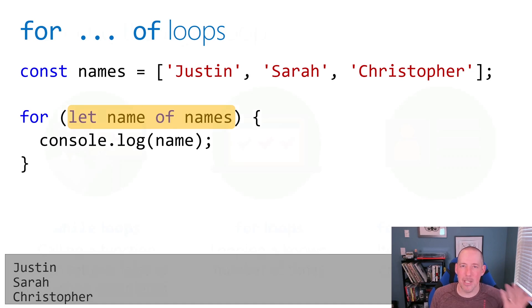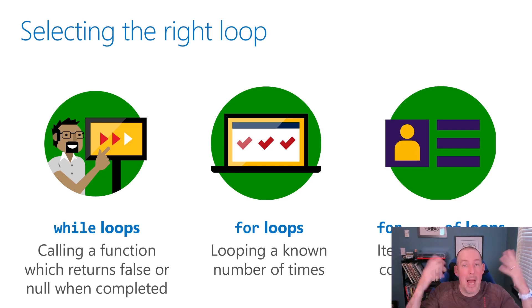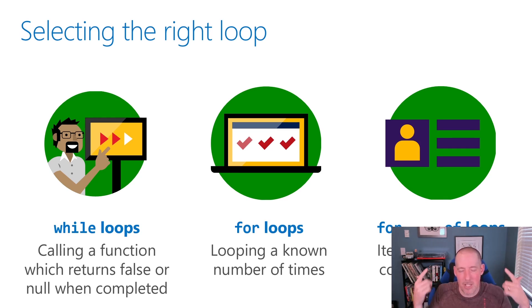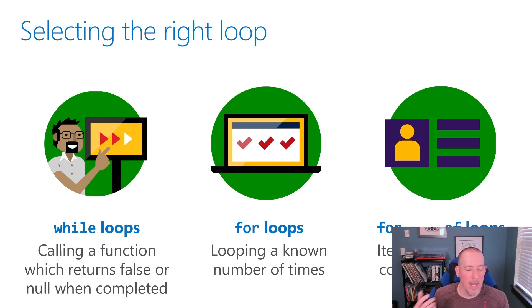So with that in mind, let's talk about where you might want to select each loop. A while loop is great if you're calling some helper function that's eventually going to give you back a null value — you don't know how many times you'll execute, and you're depending on something to eventually change the condition for you. A for loop is perfect for executing a known number of times, whether that's hard-coded or coming from a variable. And for of is going to be perfect when you have an array or some form of a collection. So that's the concepts of loops — let's go ahead and take a look at all of this in code.